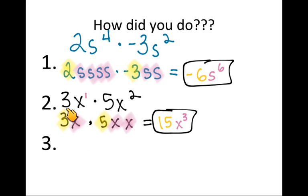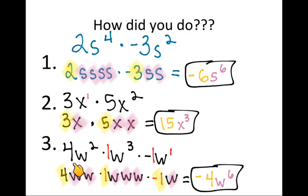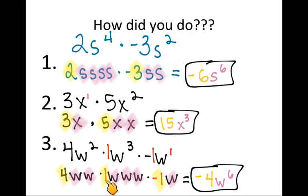For the second problem: 3x to the 1st times 5x squared. Expanding gives 3x × 5xx. Multiplying: 3 × 5 = 15, and there are 3 x's total, so 15x cubed. For the third problem: 4w squared times 1w cubed times negative 1w to the 1st. The coefficients give 4 × 1 × (−1) = −4, and there are 6 w's total, so negative 4w to the 6th power. Ask if you have questions.